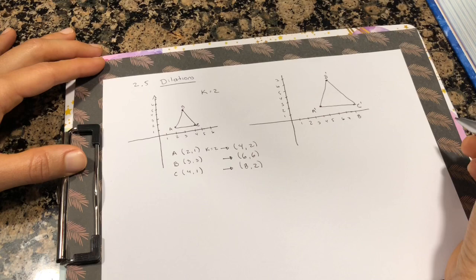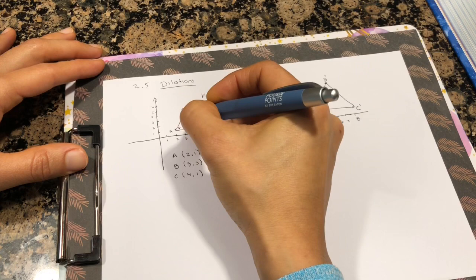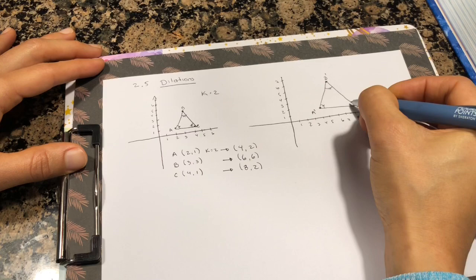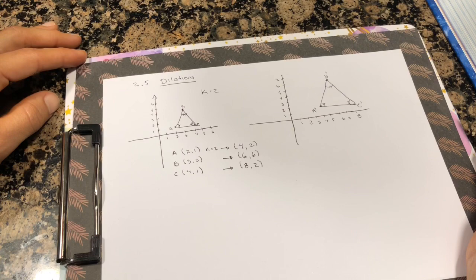If you notice, like I said before, the angles remain the same, congruent. This angle will be the same as this angle. This angle will be the same as this angle. And this angle will be the same as this angle. But the sides do change. The sides get bigger or smaller. That's a dilation. It keeps the shape, but the shape will be bigger or smaller, depending on the factor, on the scale factor.